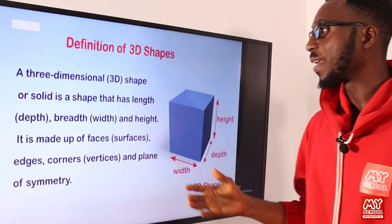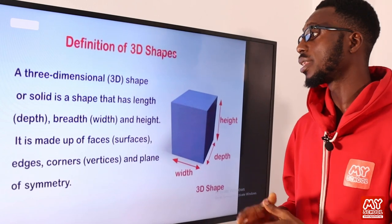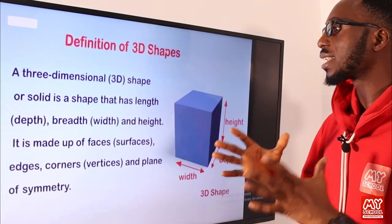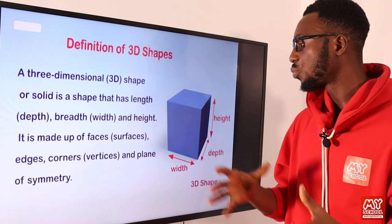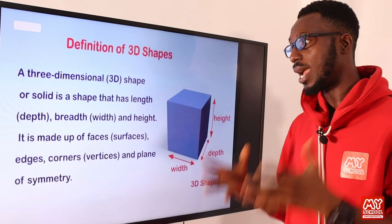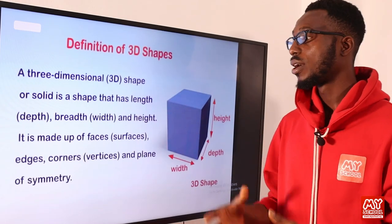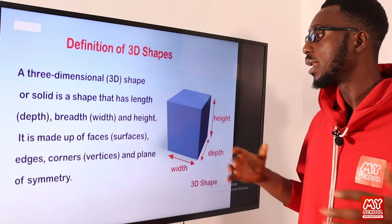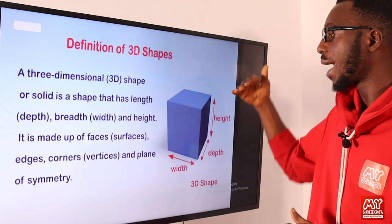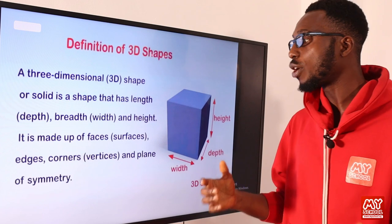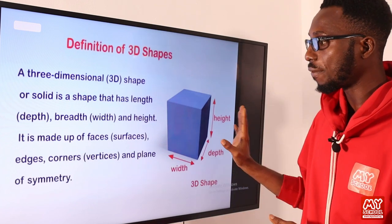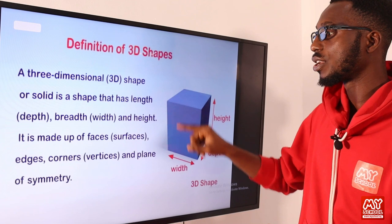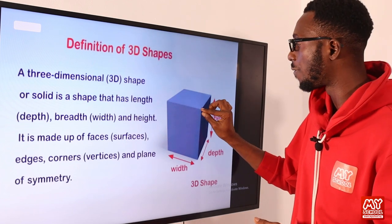A 3D shape or solid is a shape that has length — which we regard as the depth — the breadth, which you can regard as the width, and the height. It is made up of faces, which are your surfaces. It has edges as well, and it has corners or vertices.